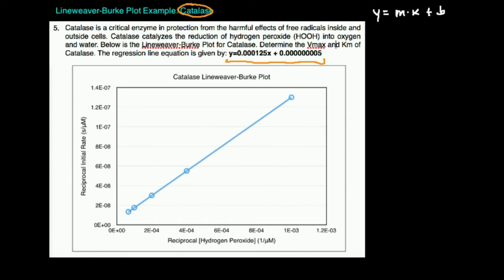The y-intercept B — which in this equation is 5 times 10 to the minus 9th — is equivalent to 1 over the Vmax, or the reciprocal of the Vmax. The slope M, which in this case is 0.000125, turns out to be the quotient of the Km and the Vmax: Km divided by Vmax.